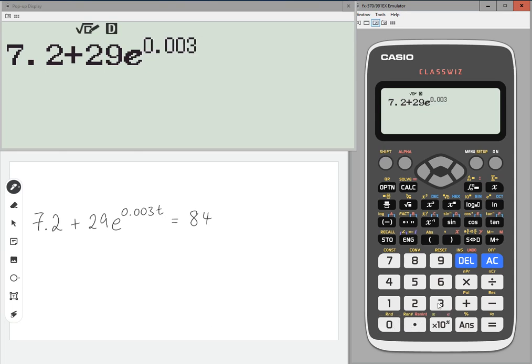0.003. Now we don't have T, but we do have X, so I'm just going to use X for T here. Then press right.